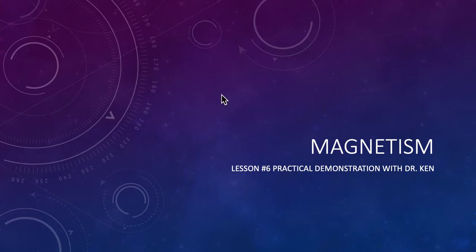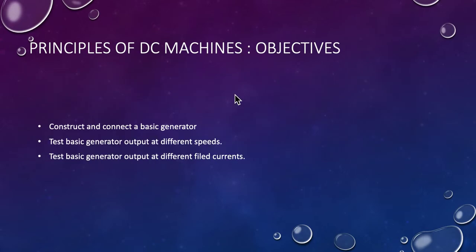This is lesson six, practical demonstration of electromagnetism. Today we're looking at the principles of DC machines, generators in particular. We'll be looking at the construction and connection of a basic generator, some tests we can do on basic generator output at different speeds, and testing the generator at different amounts of field current.